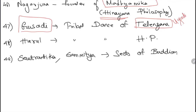Gusadi is a tribal dance of Telangana — easy to remember because Ugadi, the Telugu New Year, is also from Telangana. Harul is a tribal dance of Himachal Pradesh. Sautrantika and Sammitiya are different sects in Buddhism.